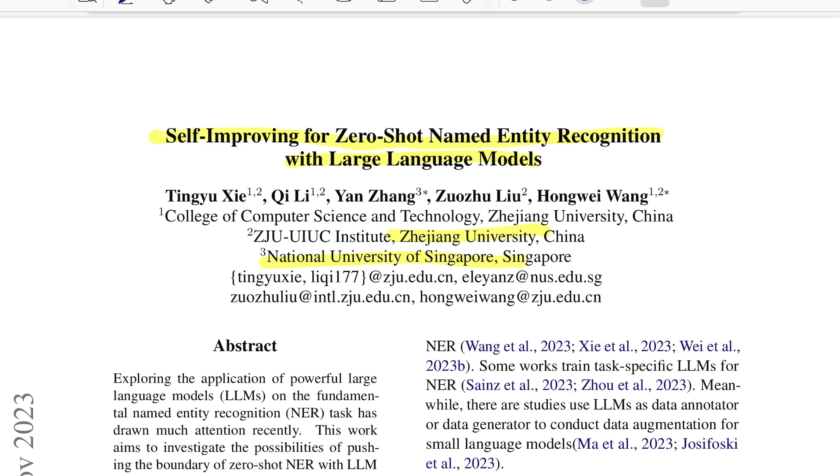By reading just the title it's pretty clear what this paper is going to be. It's about using large language models for doing named entity recognition in a zero-shot fashion and there is some mechanism of the large language model improving itself.